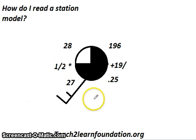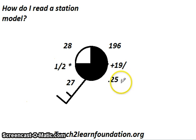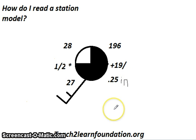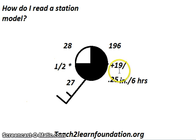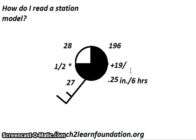I'm going to skip over the tail and just go for the numbers right now. This 0.25 is actually 0.25 inches, and that is how much precipitation has fallen in the last six hours at the station. This number 19 with the plus sign means that the barometric pressure has been going up at a steady rate of 1.9 — the decimal point is not included because of the way the station model is constructed in shorthand — so the barometric pressure has gone up by 1.9 at a steady rate for the past three hours.